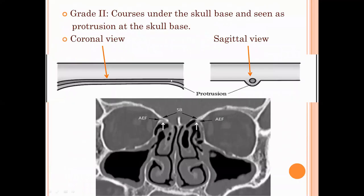In Grade 2, the artery courses on the skull base and is seen as a protrusion at the skull base area. This protrusion is visible in both the coronal view and the sagittal view. The coronal CT cut also shows the anterior ethmoidal artery as a protrusion in this grade.